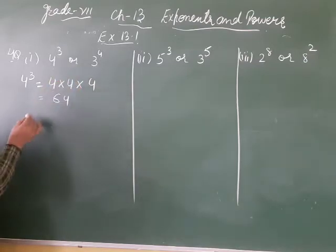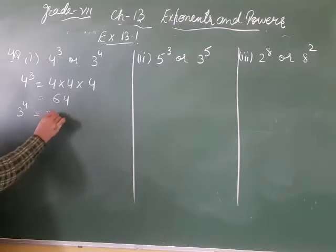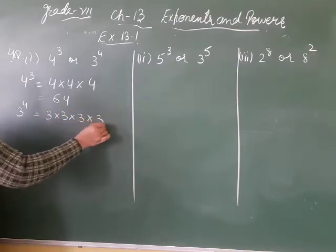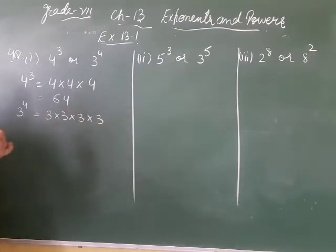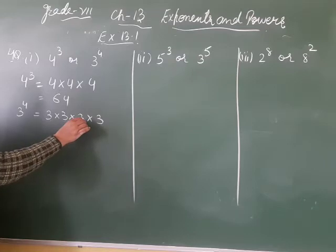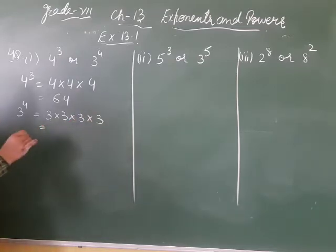Next is 3 raised to power 4. 3 raised to power 4 means you multiply 3 by itself 4 times. So: 3 threes are 9, 9 threes are 27, and 27 threes are 81.